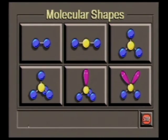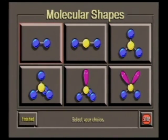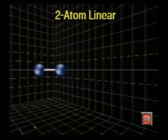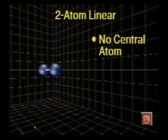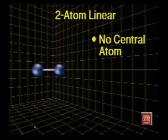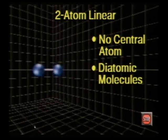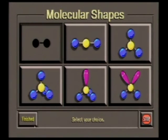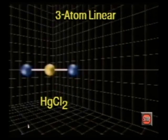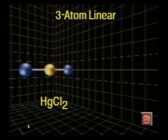To see how this model works, select a geometric shape. This is a linear shape. Neither atom is considered central because there are only two atoms. Since two points determine a line, this must be linear. All diatomic molecules exhibit a linear shape. This geometric shape is referred to as linear.